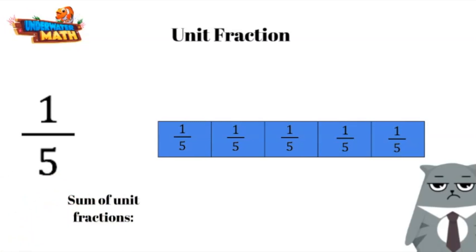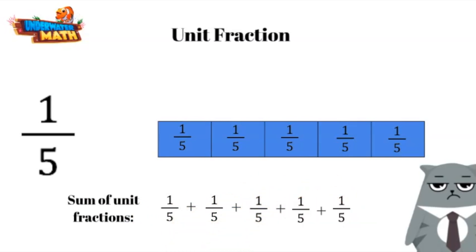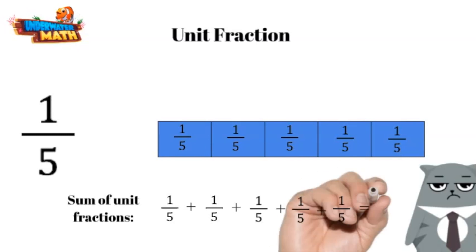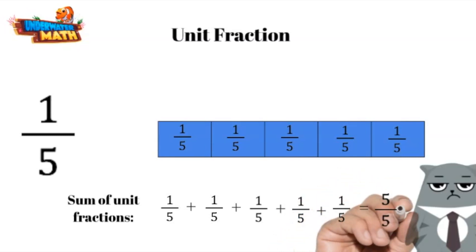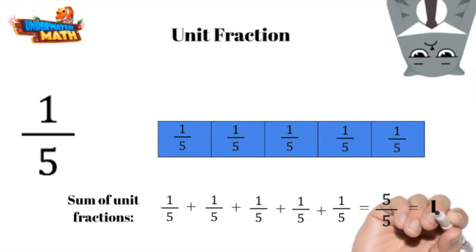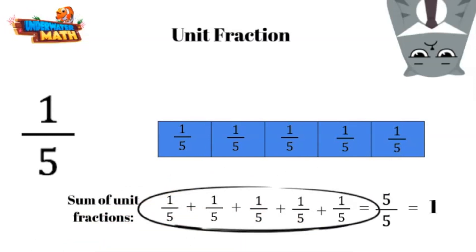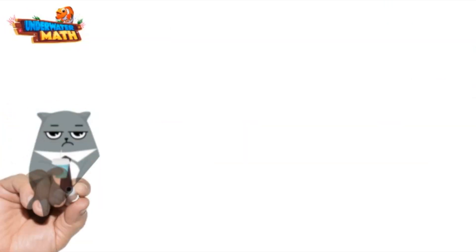We can represent this area model with the sum of unit fractions that make up all the shaded parts — that means you add them all up. When we add up all the unit fractions in this model, we get five-fifths, which is one whole. We just decomposed the fraction five-fifths into a sum of unit fractions.